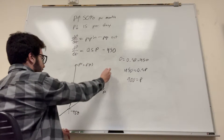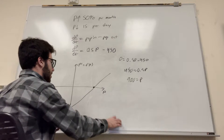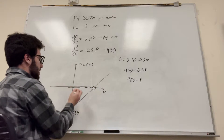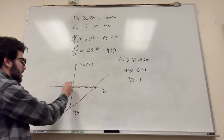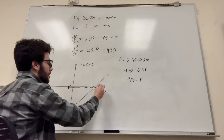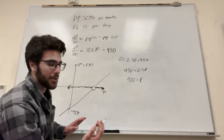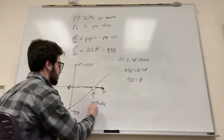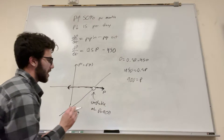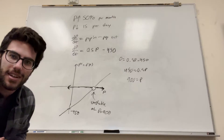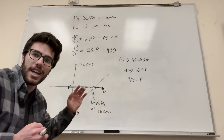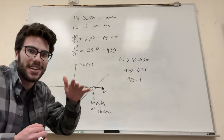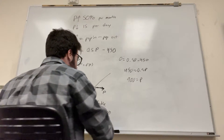Drawing the phase lines: below P = 900, the derivative is negative, so the arrow points left — population decreasing. Above P = 900, the derivative is positive, so the arrow points right — population growing. This gives us an unstable equilibrium at P = 900. Above 900 it grows, below 900 it decreases, and at exactly 900 it stays still.